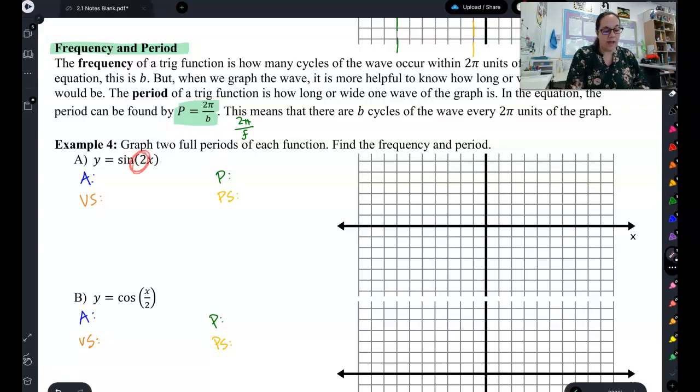So for this one, if I have two waves that will fit in 2 pi, I do 2 pi divided by that 2. And that tells me that each wave is going to be pi long. So now, instead of my box being 2 pi long, I only need the box to be pi long. So let's go through and graph this one.